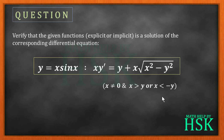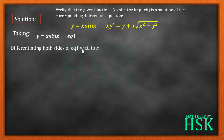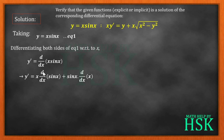Taking the given function y = x sin x as equation one and differentiating both sides with respect to x, we get y' = d/dx(x sin x). Applying the product rule: y' = x · d/dx(sin x) + sin x · d/dx(x) = x cos x + sin x.